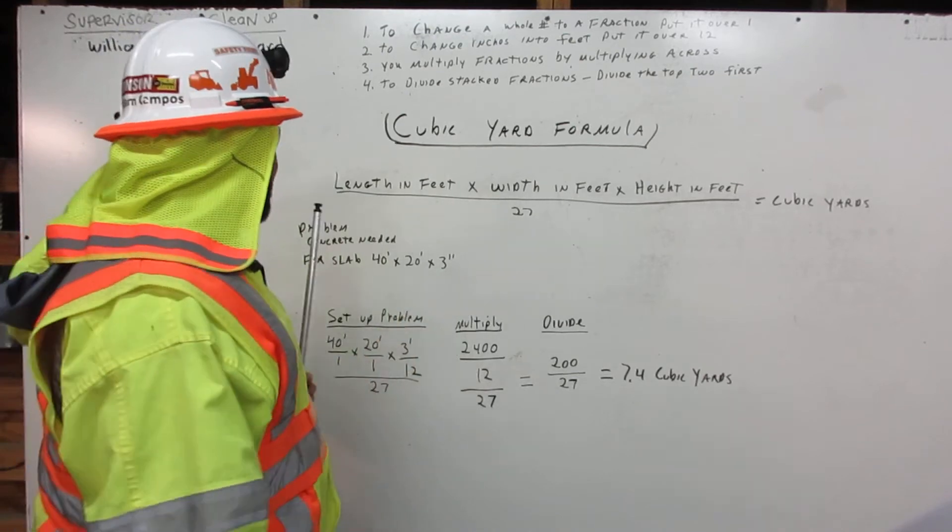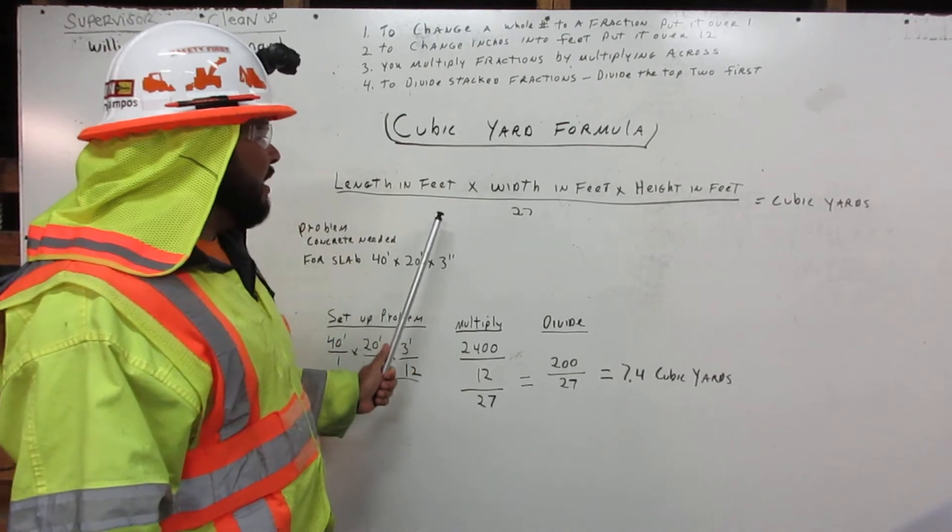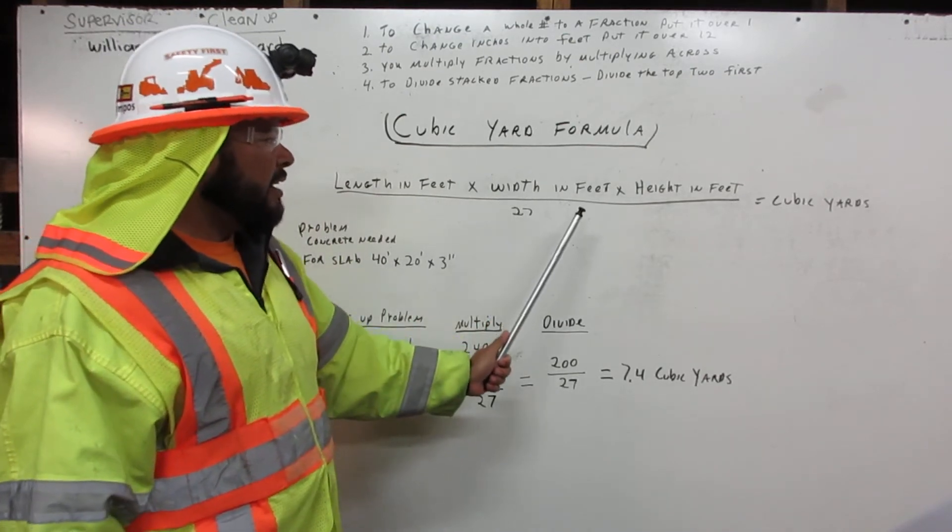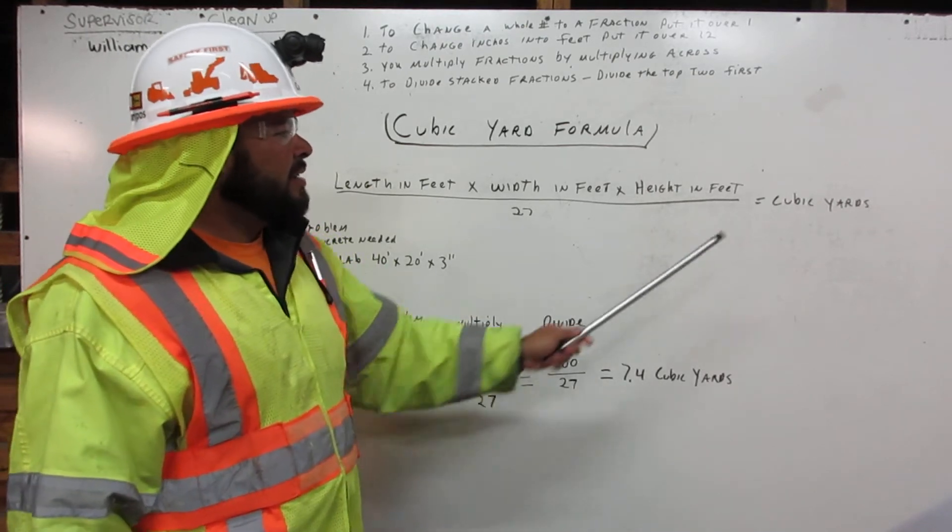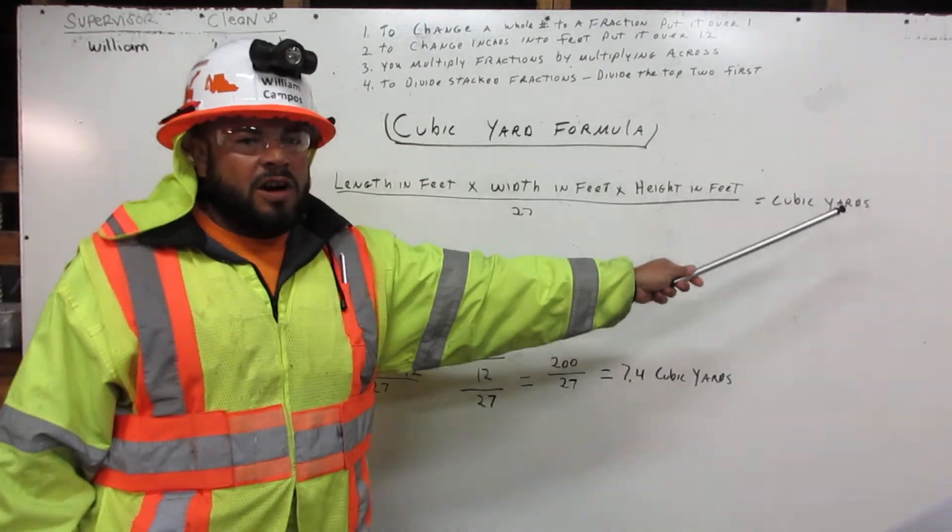The cubic yard formula: we have length in feet times width in feet times height in feet over 27, and it will give us the cubic yards.